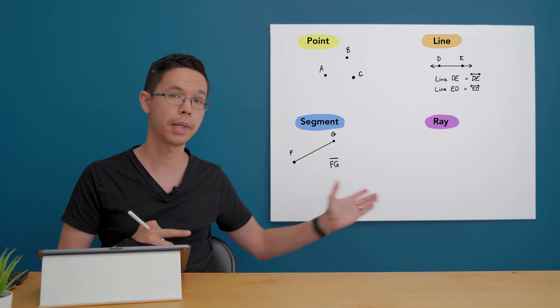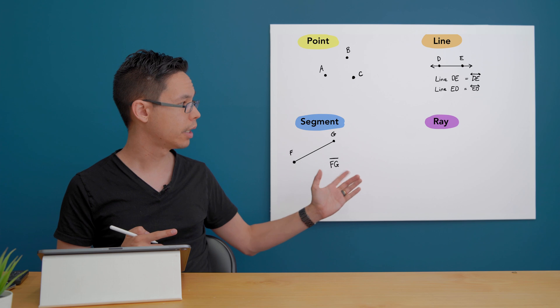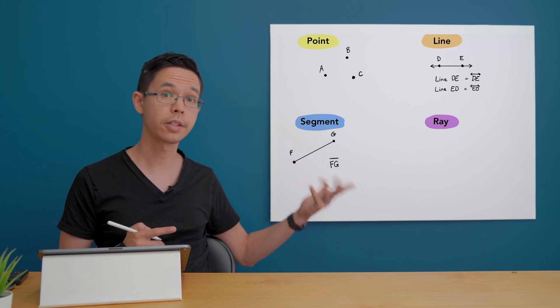This object here is symmetrical so I could label it with the letters back to front and it'll still be the same thing.